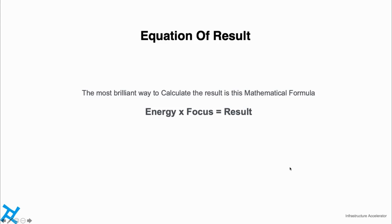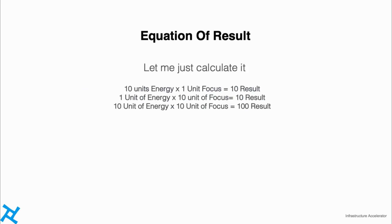The equation of result: the most brilliant way to calculate the result is this mathematical formula — Energy × Focus = Result. This was an eye-opening concept for me. My whole life, when I had to pass an exam the next day, I used to dedicate that entire day to the subject and ace the test. When I'm fixing a machine, I stop thinking about anything else and just focus on it and get it done. It happens with most of our hobbies — from fixing cars to painting to watching movies — you get excellent results because you put the right amount of focus into it.